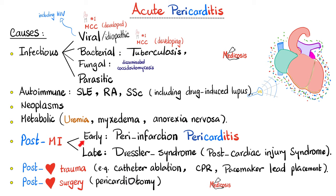Post-myocardial infarction is very important because we have two different types of pericarditis after MI. If it happens one to four days after the myocardial infarction, this is peri-infarction pericarditis, probably due to direct contact between the myocardium and the pericardium. In myocardial infarction, the problem is in the myocardium and can extend to the pericardium. However, if two weeks or one month after the MI I develop pericarditis, this is Dressler syndrome — most likely an autoimmune disease, not a direct extension of the inflammation. Post-cardiac trauma, such as catheter ablation, can also cause pericarditis.